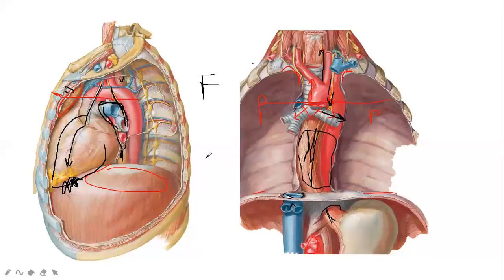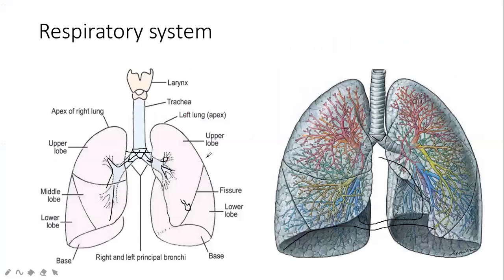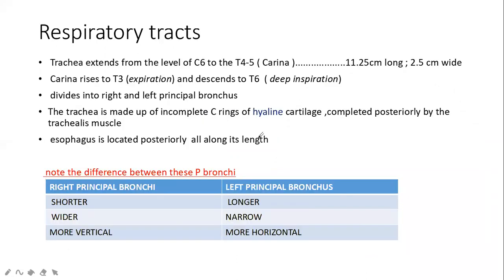Hello everyone, we are now in the second segment of this topic. We talked about the pericardium and the respiratory system, so I want to talk about the respiratory system in this segment. We have the trachea bifurcating at the carina to give the right principal bronchus and the left, going into the right lung and left lung.